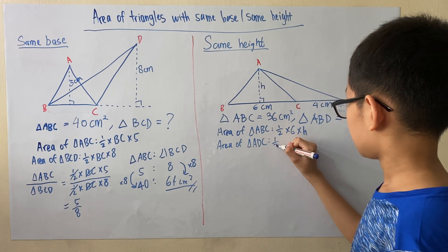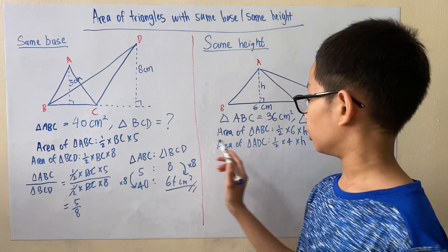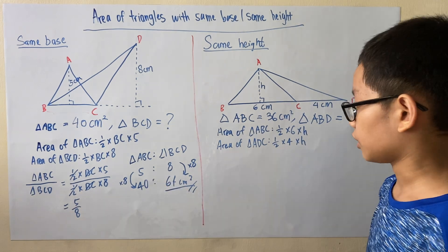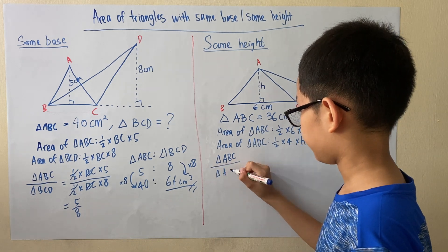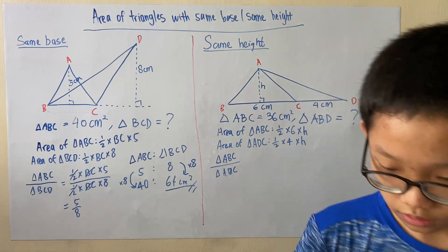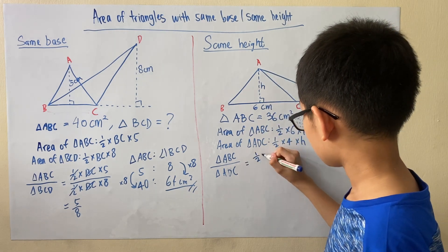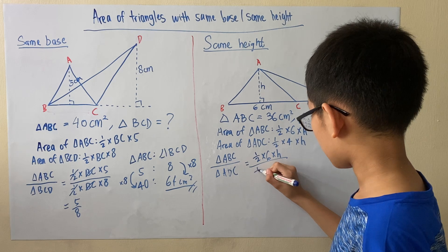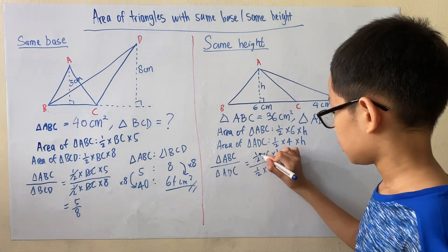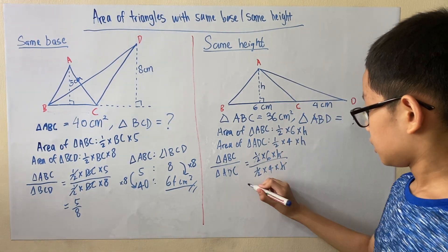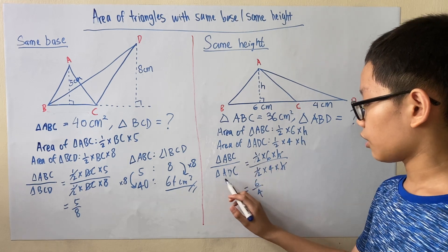We want to find the ratio of triangle ABC to triangle ADC, just like the previous question. So we do triangle ABC over triangle ADC, which equals half times 6 times H over half times 4 times H. Both the halves and H cancel out, so we get 6 over 4, which is the ratio of the area of triangle ABC to the area of triangle ADC.